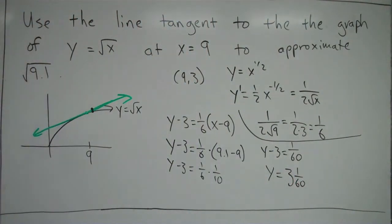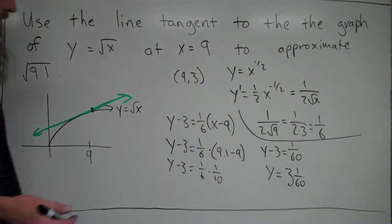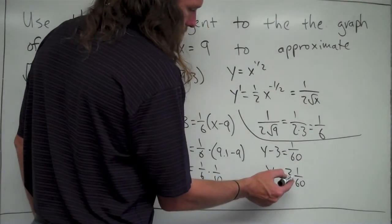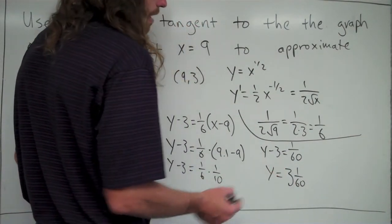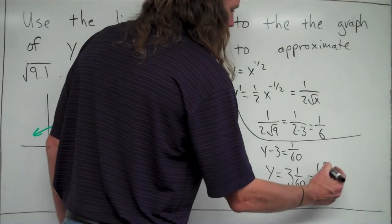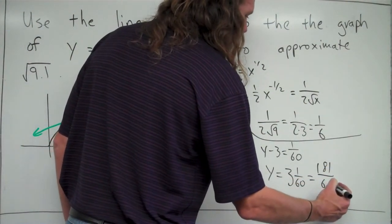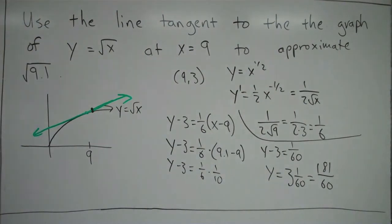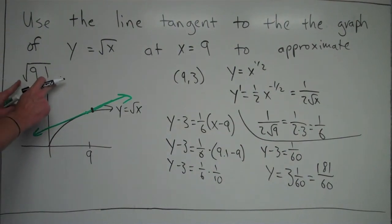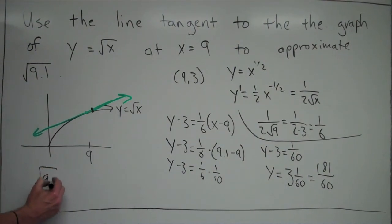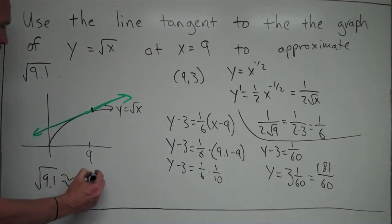We can write it as, if you wanted to make it not a mixed fraction, 3 times 60 would be 180, so we can do 181/60 if you wanted to. It's the same thing either way, or you could write it as a decimal. The idea is that that value, 181/60, is approximately √9.1. That was our goal. Our goal was to figure out an approximation for this. So we know now that √9.1 ≈ 181/60.